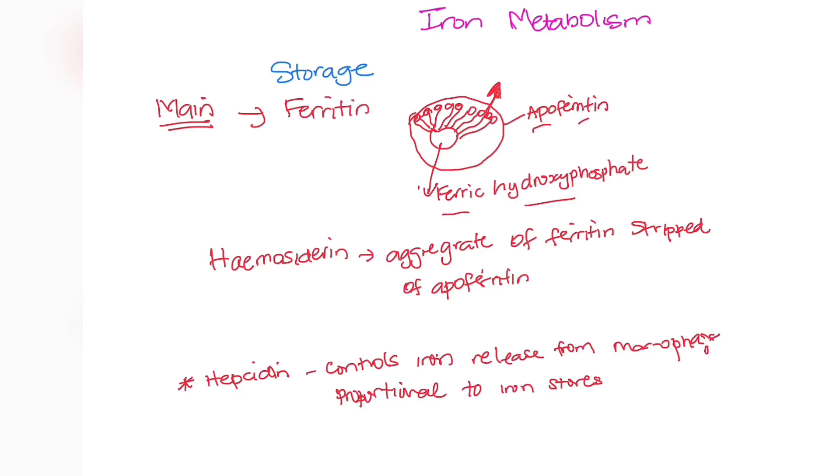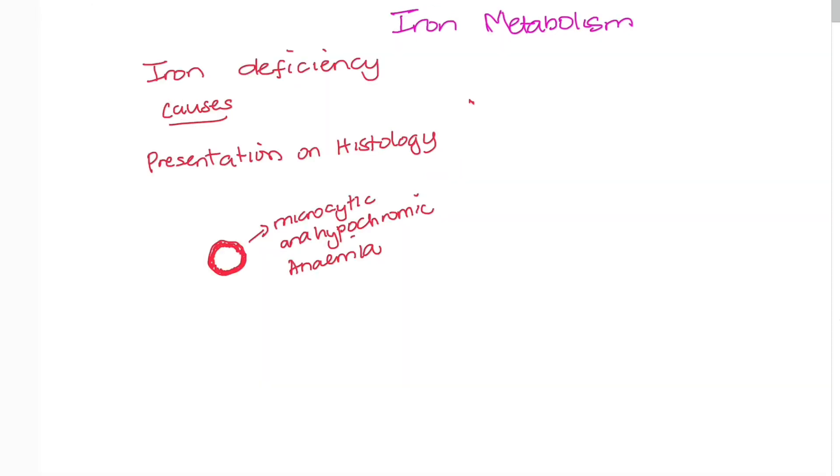I forgot to mention hepcidin. When old blood cells return to the reticuloendothelial system and are released from the macrophage, this process is actually controlled by hepcidin, and it's proportional to the iron store. Hepcidin is upregulated when the iron stores are high but downregulated when the iron stores are low.